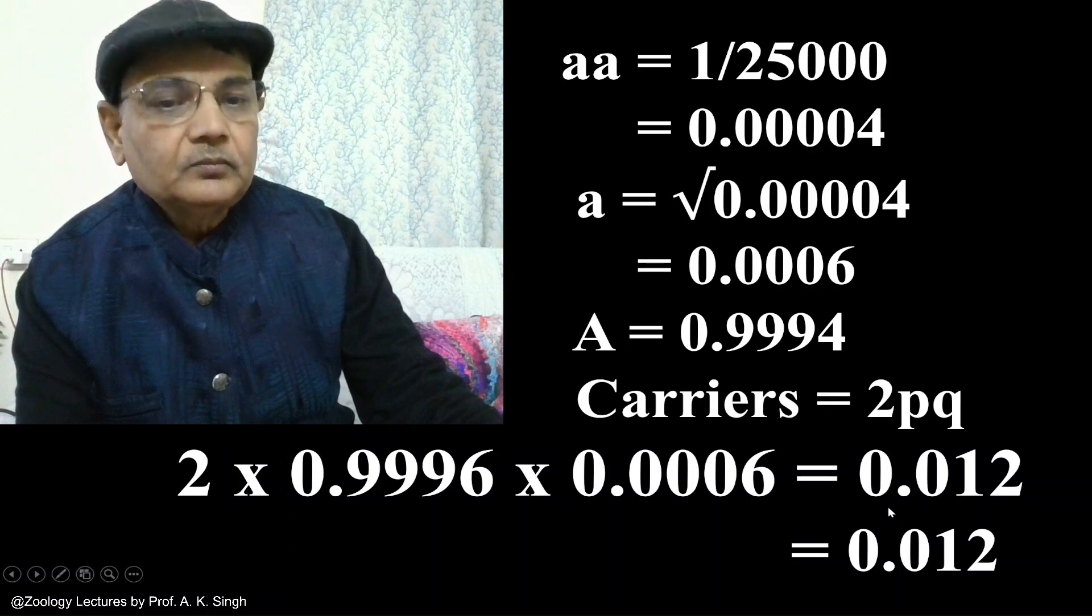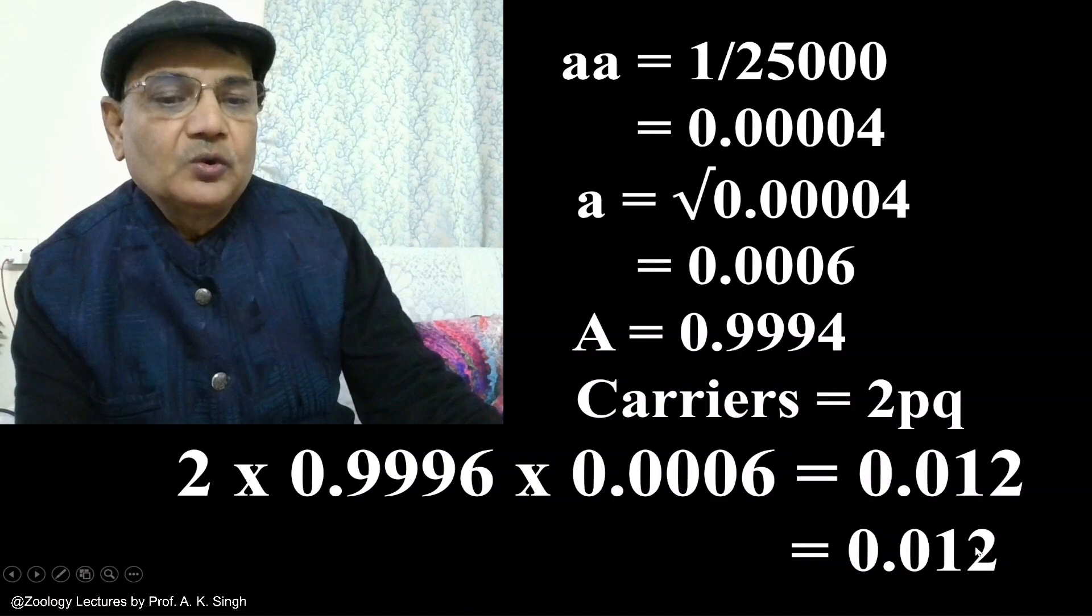So the number of carriers in this population will be 0.012.